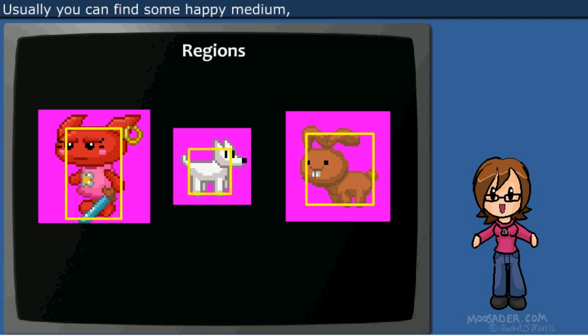Usually you can find some happy medium where you're covering most of the object's body, but also have some things that don't count as solid, such as your character's hair or their arms.